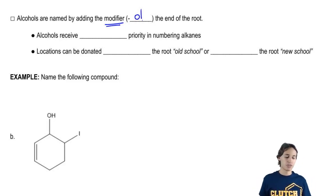So actually you can remember that the modifier is ol just by looking at the word alcohol. It tells you that the modifier is going to be ol.